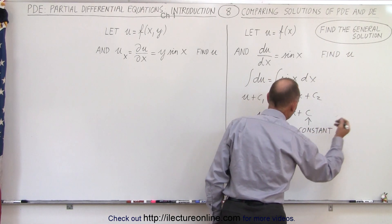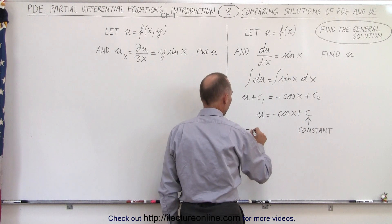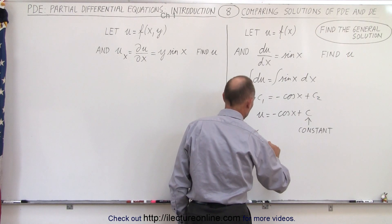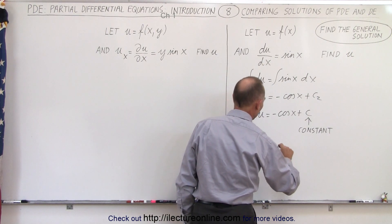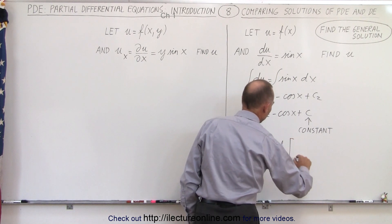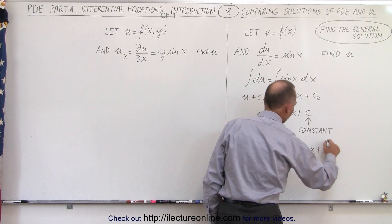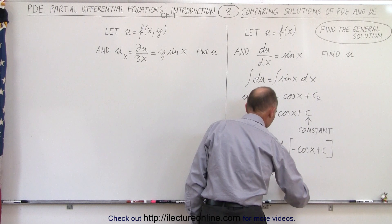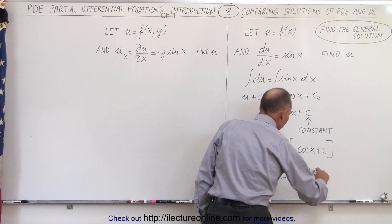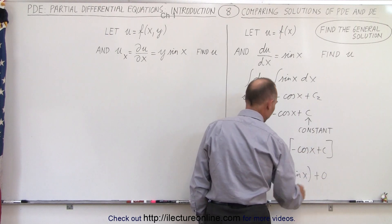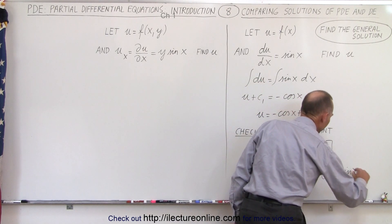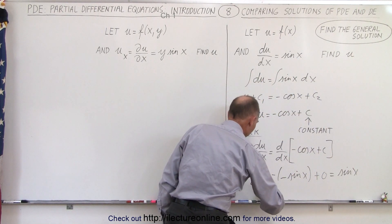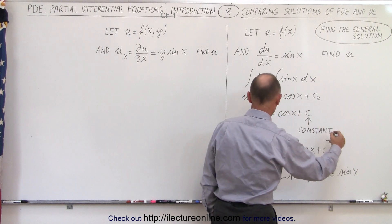Now let's take the check to see if we got the right solution. We're going to take the derivative with respect to x. So du/dx is equal to d/dx of the negative cosine of x plus a constant of integration. The derivative of cosine is negative sine, so this becomes the negative of the negative sine of x, plus zero because the derivative of a constant is zero. This gives us the sine of x, which confirms that the derivative of u with respect to x is indeed the sine of x. So we found the correct solution.